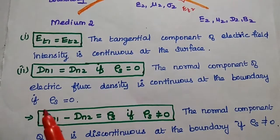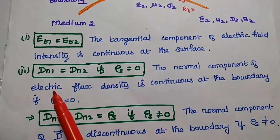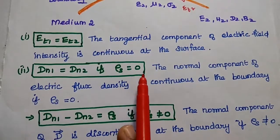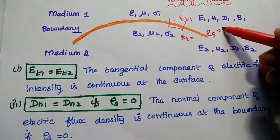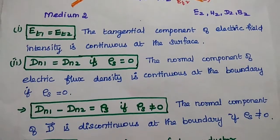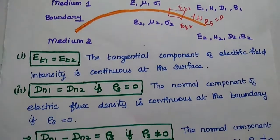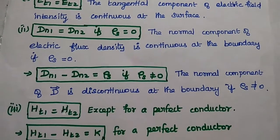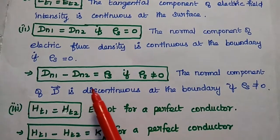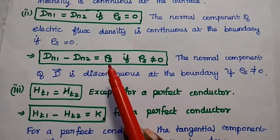There is a change in the normal component of electric flux density — D means electric flux. The normal component of electric flux density is continuous when rho_s equals 0, meaning if the surface charge density is zero and there is no charge on the surface. But if there are charges on the surface, the normal component is not continuous. If rho_s is not equal to 0, then the normal component of electric flux density is discontinuous, and its difference value equals the rho_s value.